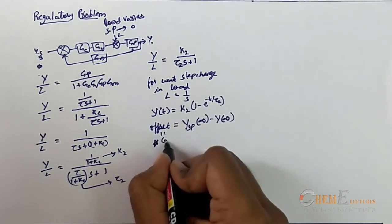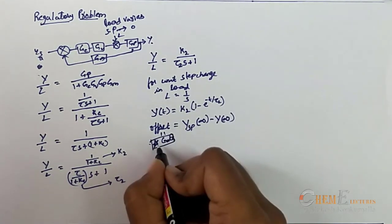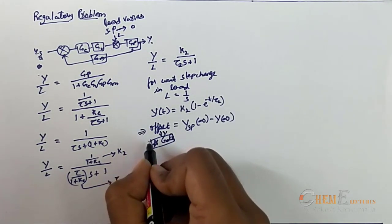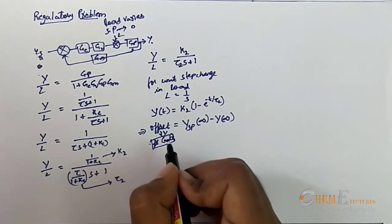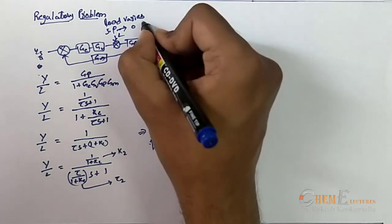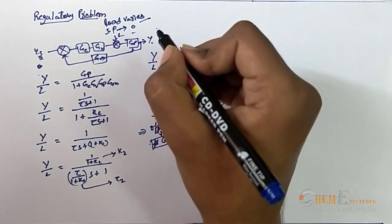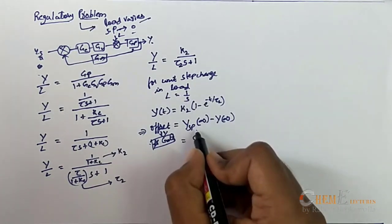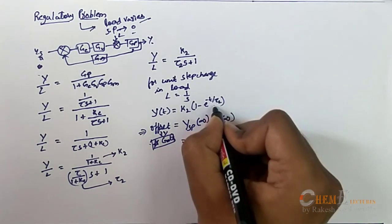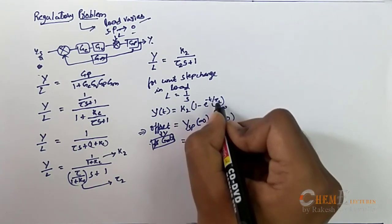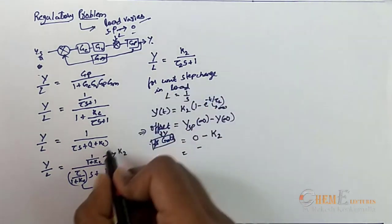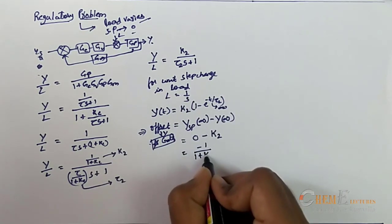This term offset is very important from a GATE exam point of view — almost every year there is at least one offset question, so if you are preparing for GATE, be clear with this term. The offset here: Ysp(∞) = 0 because the load varies but setpoint is constant at 0 in the regulatory problem. Y(∞) = K2, since e^(-∞) = 0. So offset = 0 - K2 = -K2 = -1/(1 + Kc).